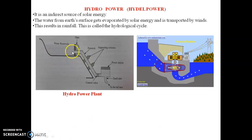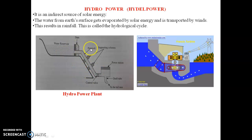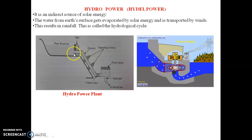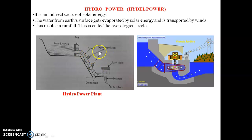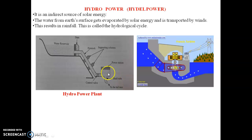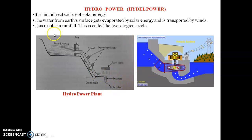The schematic diagram of the hydroelectricity power plant is shown here. It consists of a water reservoir, a dam, a penstock, supporting columns, a control valve, a draft tube, a powerhouse, and a tailrace. These are the important components existing in this hydroelectricity power plant.